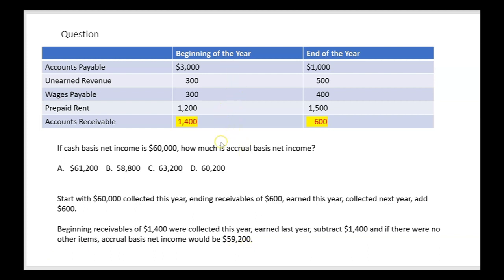If the only change here was the change in accounts receivable, accrual basis net income would be $59,200. Remember that revenue and net income have a direct relationship, so whatever we do to revenue has the same impact on net income. When we added $600 to revenue, we added $600 to net income; when we took $1,400 off revenue, we subtracted $1,400 from net income. We're not done yet, so let's bring forward $59,200 and go on to another account now that we've handled receivables.